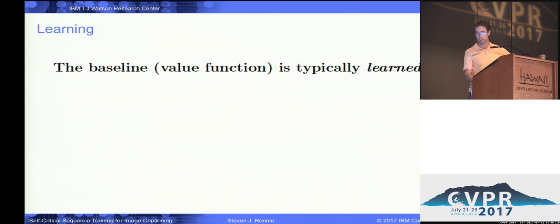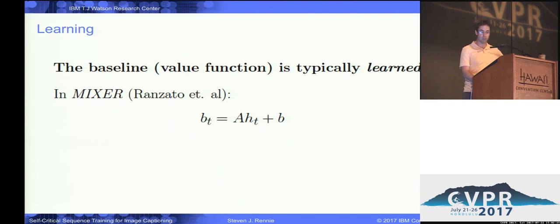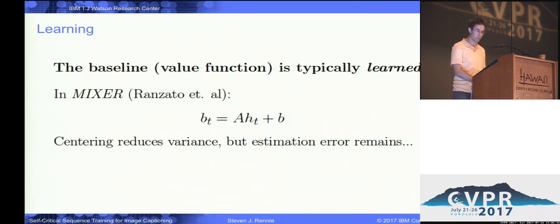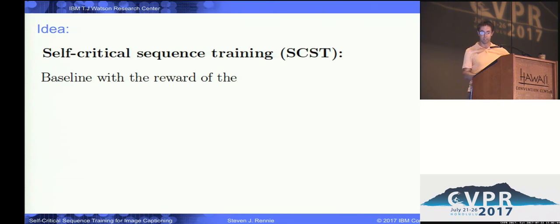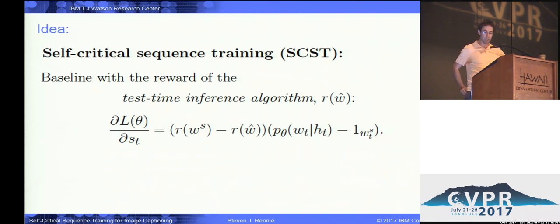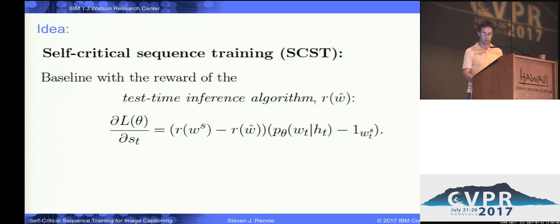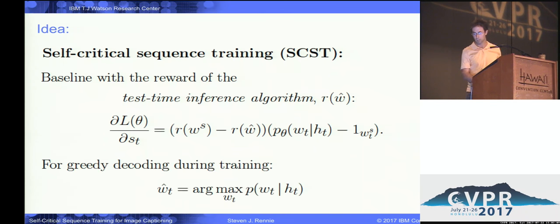This can be backpropagated through the network to optimize the parameters of the model. The baseline or value function is typically learned — for example, in Mixer it's just a linear function of the hidden units at the particular time step where the word is being generated. Centering reduces variance, but estimation error remains. The idea with self-critical sequence training is to baseline with the reward of the test-time inference algorithm. We usually use beam search when decoding, and if we baseline with the reward obtained by our current model, we only give positive reward to sentences that are better than the current output — so we are guaranteed to improve our model.